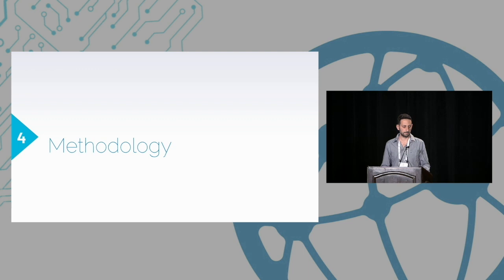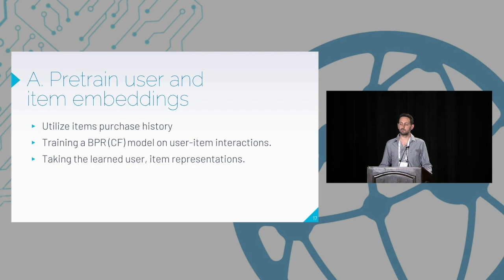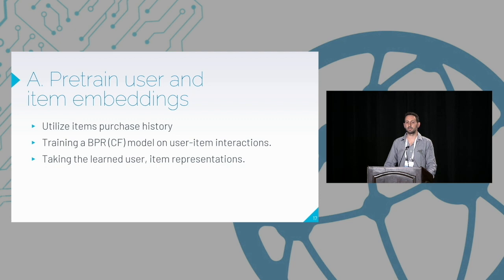Our methodology is built upon four steps. The first is pre-trained user and item embeddings. The main problem is that users do not interact much with bundles, but they do interact a lot with items, so we want to leverage this. We train a BPR model at the user-item level and use this representation as a pre-trained embedding for our model.